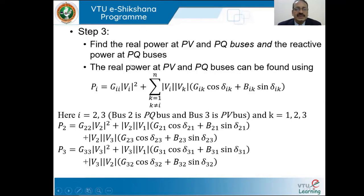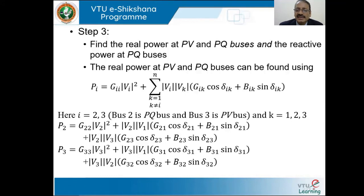In step 3, we find the real power at PV and PQ buses and the reactive power at PQ buses using the Newton-Raphson power flow equation. Here i = 2 (PQ bus) and i = 3 (PV bus), with n = 3 buses and k taking values 1, 2, or 3. We substitute the relevant subscripts to obtain expressions for P2 and P3.